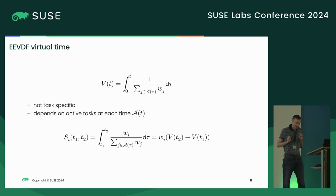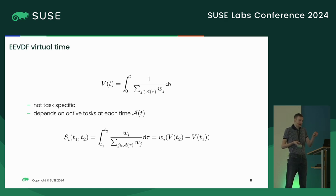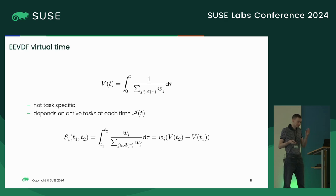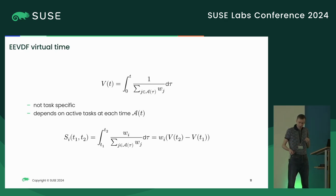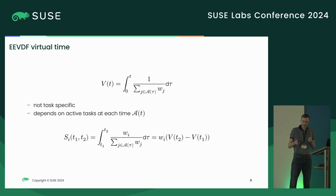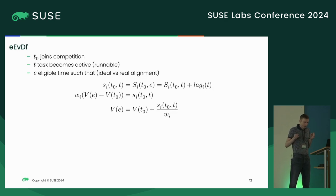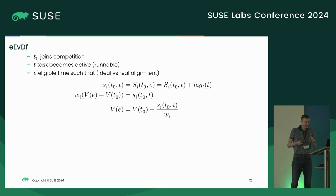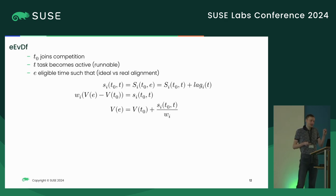Another quantity introduced in the paper is virtual time, which is like the passage of real time normalized by the set of tasks running at each moment. The ideal service time for a task between two time moments can be expressed as the difference in virtual times scaled by the task's weight WI. From this we can now see what EEVDF stands for: Earliest Eligible Virtual Deadline First.